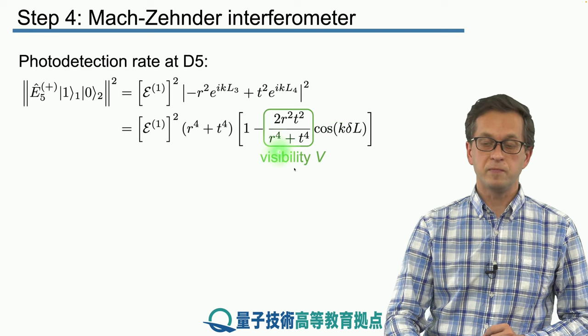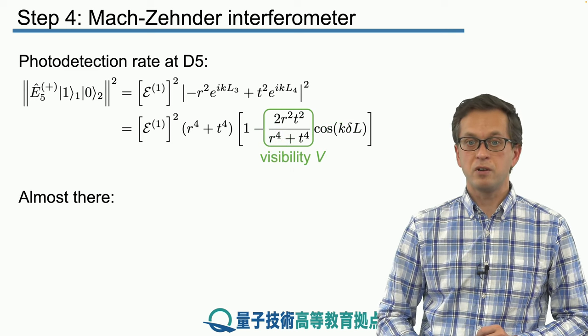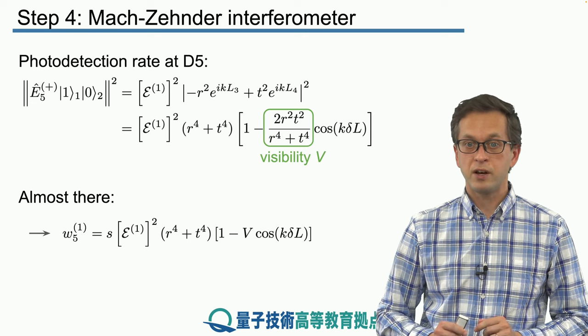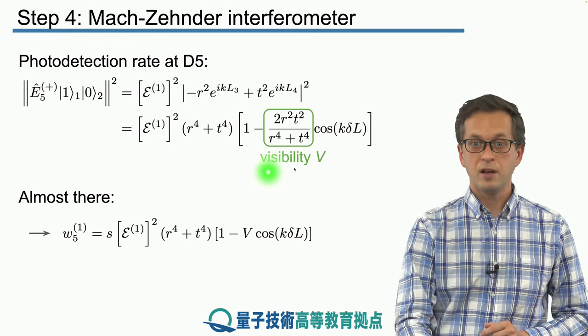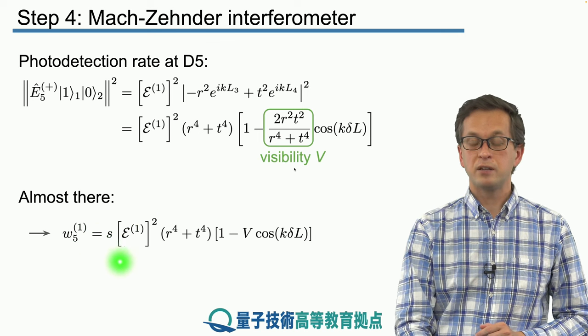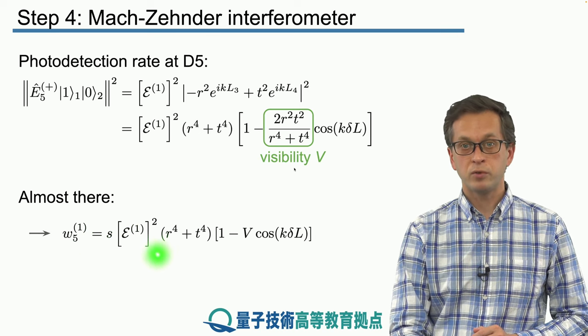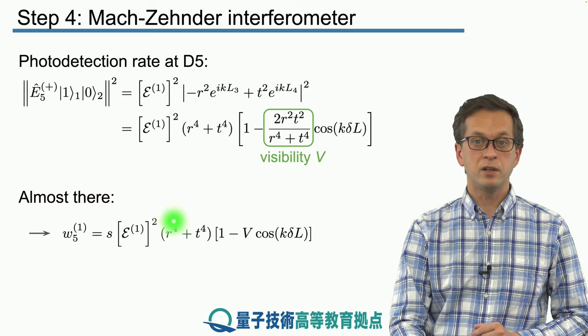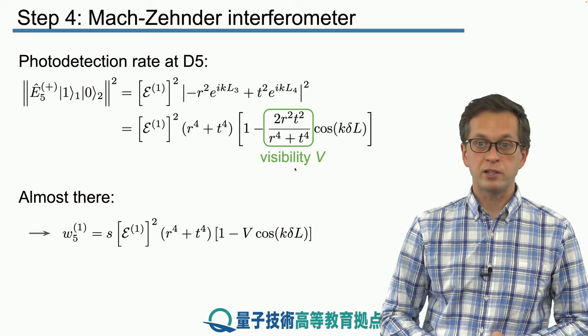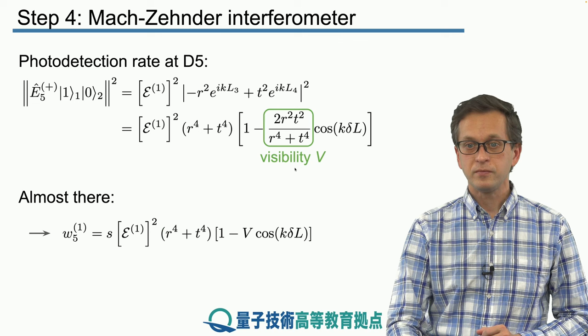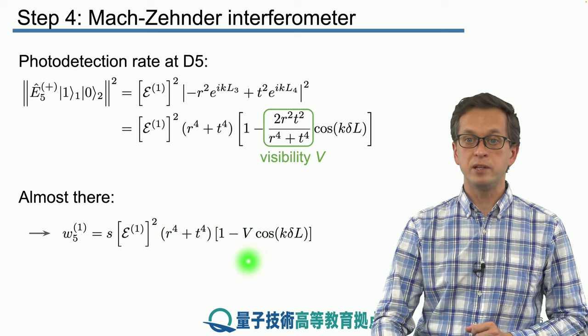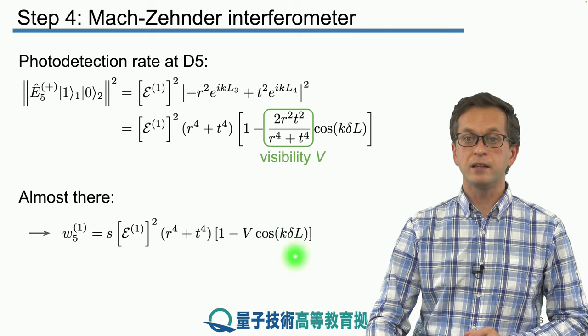We can further simplify by calling this expression V. It's known as visibility. So our final expression for W1 of detector 5 is the following. We've got the sensitivity of the detector times the 1 photon amplitude squared plus this multiplying factor related to the amplitudes of reflection and transmission. And finally we've got this oscillating term, 1 minus the visibility times cos(k δL).